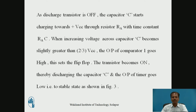As the discharge transistor is off, the externally connected timing capacitor C starts charging towards plus VCC through external resistor RA with time constant RA×C. When the increasing voltage across capacitor C becomes slightly greater than two-thirds VCC, the output of comparator 1 goes high, which sets the internal flip-flop so that its Q-bar output becomes low. The internal discharge transistor turns on, the external capacitor starts discharging, and the output of the timer goes low — that is, the monostable multivibrator returns to stable state, as shown in figure 3.